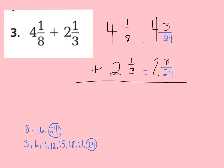So now my new equation is 4 and 3 24ths plus 2 and 8 24ths. And now I can add because my denominators are both the same. Let's keep our denominators 24 and let's just add the numerators. 3 plus 8 is 11. And let's add our whole numbers. 4 plus 2 is 6. Now I know this is simplified because 11 and 24 do not have any factors the same except for 1.